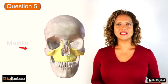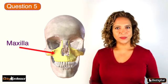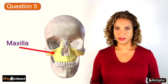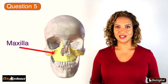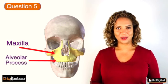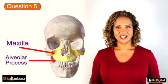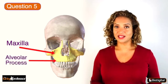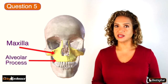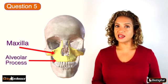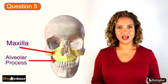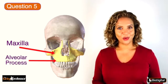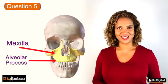Question 5. This is the maxilla, which is the largest of the facial bones, and it holds the upper teeth in its alveolar process. It also contains the maxillary sinus, which is the cavity within the bone, and it is the largest of the four paranasal sinuses.